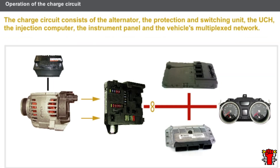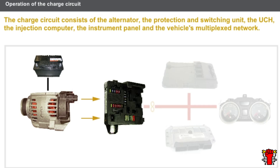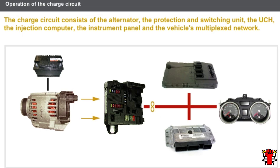The charge circuit consists of the following components: the alternator, the protection and switching unit (UPC), the UCH, the injection computer, the instrument panel, and the vehicle's multiplexed network.